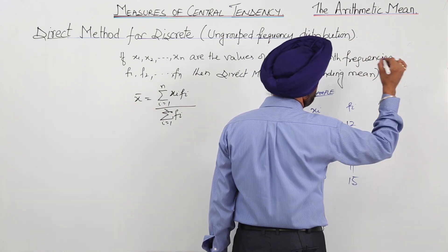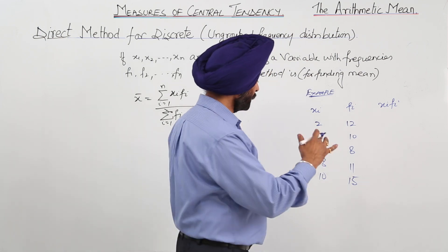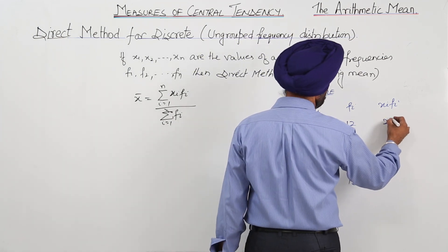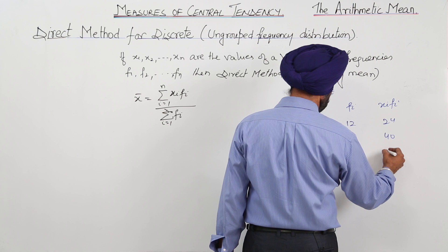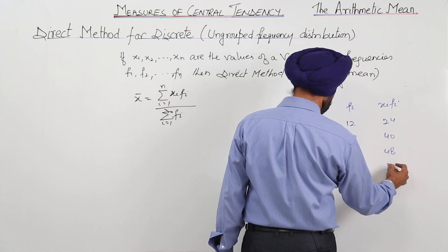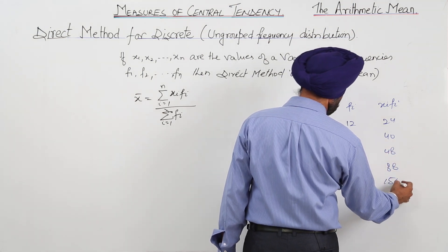Now xi fi will be what? Multiplying these two, finding the product. 24, 40, 48, 88 and 150.